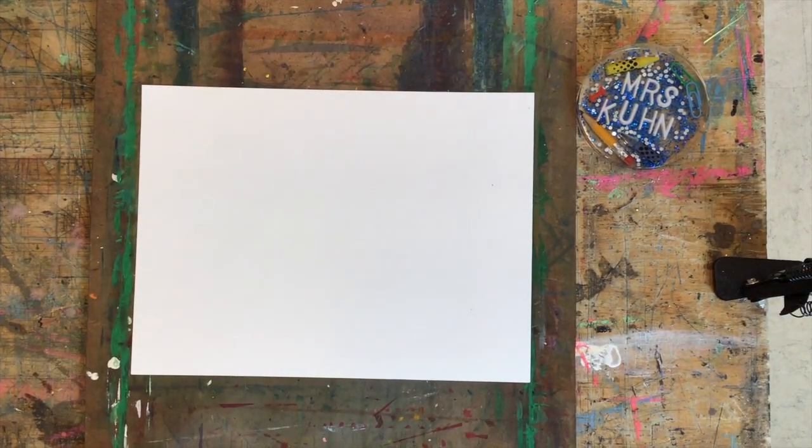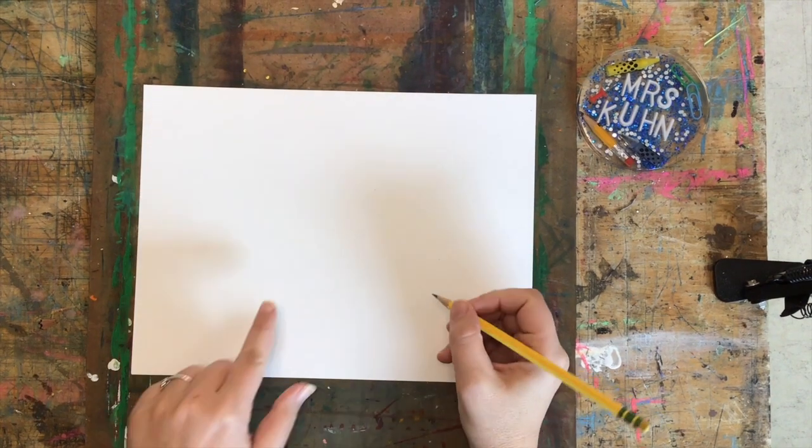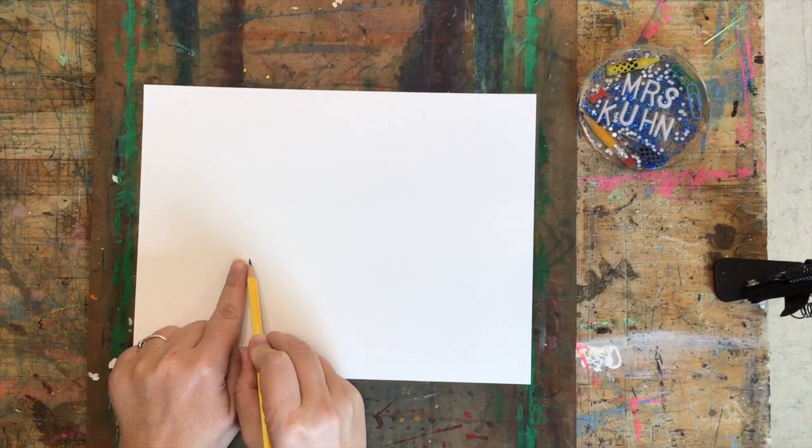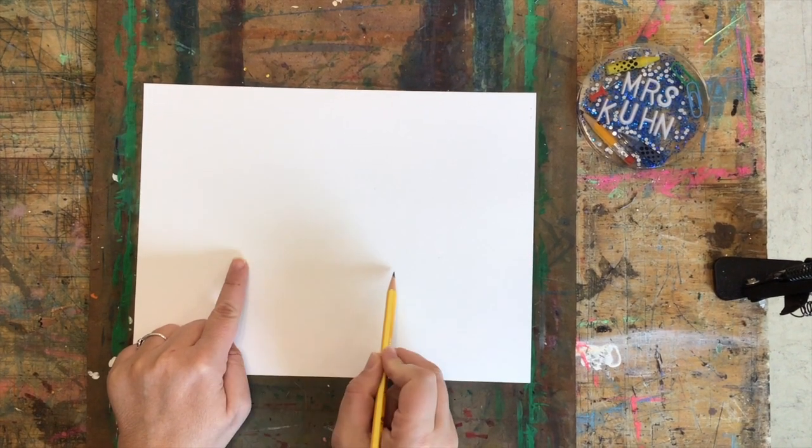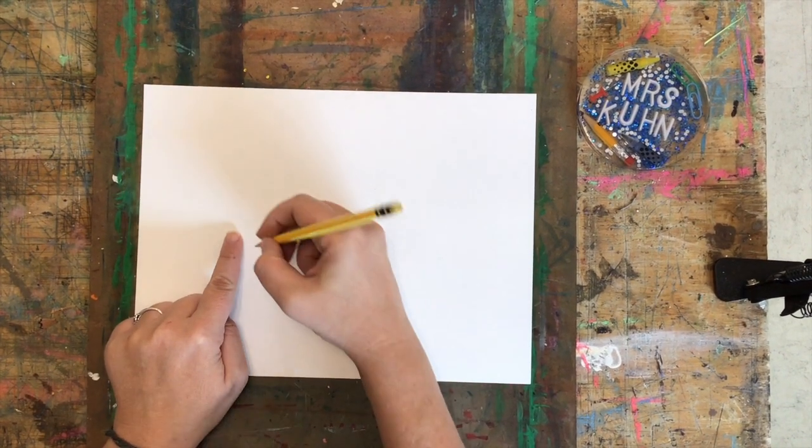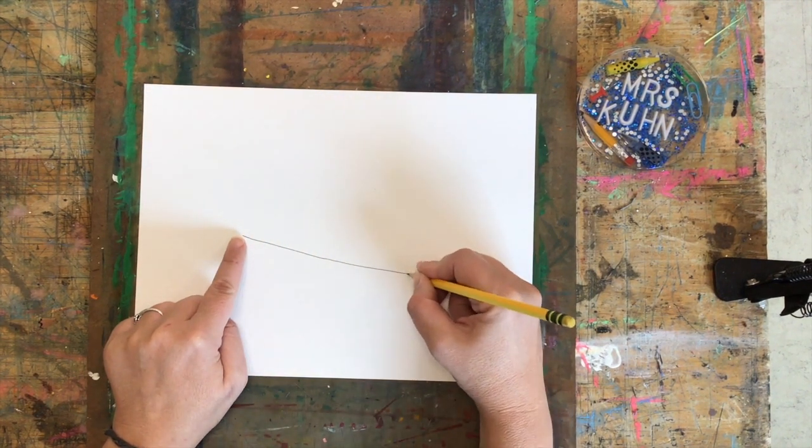Okay, so for our project today, you're going to have your paper turned horizontal and we're going to start by drawing with pencil. Our first line that we're going to draw is going to be kind of in the center-ish and it could be straight or a little bit diagonal. Mine's going to be a little bit diagonal. That means a little bit of it is high and it goes at an angle.